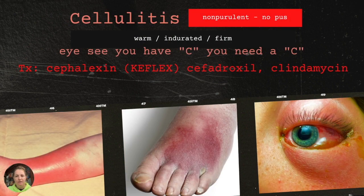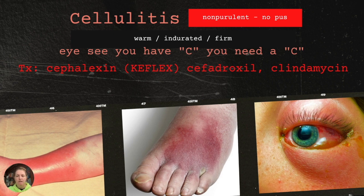Now let's differentiate between the two different types of cellulitis. When we think cellulitis, we need to ask ourselves: is this purulent, meaning it has pus, or is it non-purulent, meaning there is no pus? There are some words with cellulitis you just need to know: warm, indurated, and firm. During physical assessment, the skin is going to feel warm to the touch, indurated — meaning you can palpate and feel where the margins are — and it's going to feel firm to the touch.